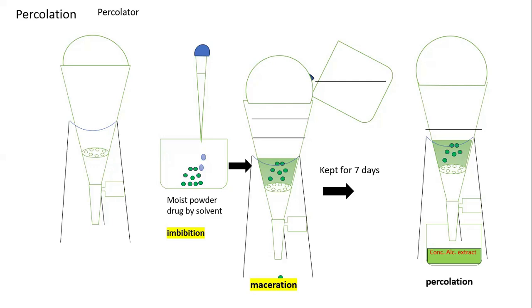To summarize: percolation is divided into three parts — imbibation, maceration, and percolation. In imbibation, we moisten the drug with solvent. In maceration, we add sufficient solvent and wait until liquid droplets begin to fall through the percolator, then close the knob, add more solvent on top, seal the vessel, and keep it for seven days. After seven days, open the knob and collect the liquid extract. In the next lecture, we will see counter current extraction. Thank you.